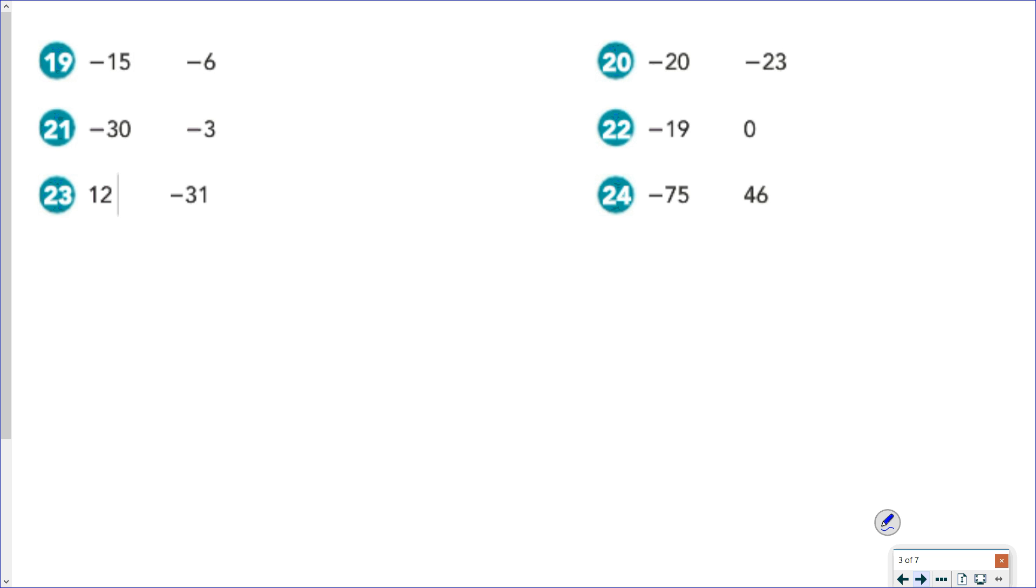So, with our six examples here, we just need to compare them. Negative 15 is going to be less than negative 6. Negative 20 is greater than negative 23. Negative 30 is less than negative 3. Negative 19 is less than 0. 0 is going to be larger than all negative numbers. Positive 12 is greater than negative 31, and negative 75 is less than 46.